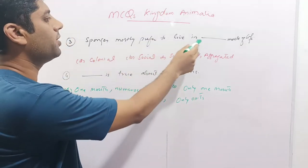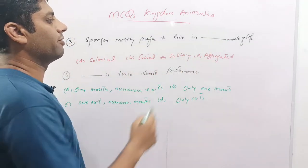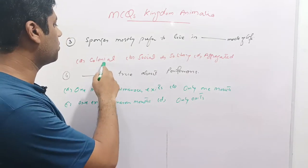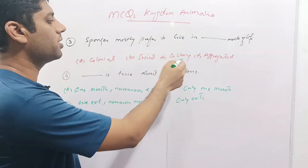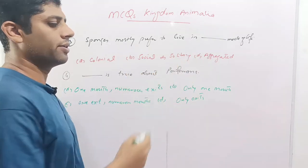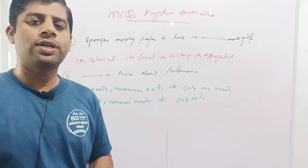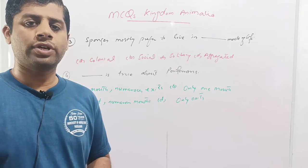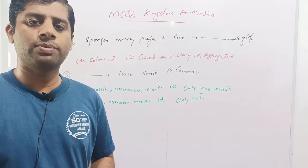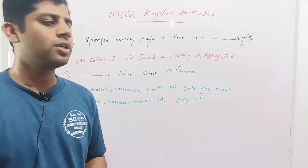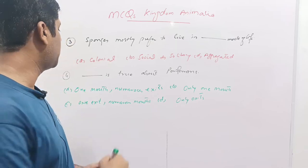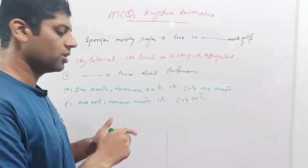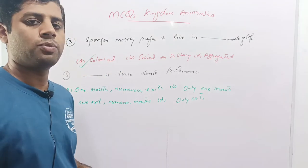Next question: sponges mostly prefer to live in which mode of life? Given options are colonial, social, solitary, or aggregated. Sponges are members of Phylum Porifera and they prefer to live in the colonial form in the aquatic environment. So option A is correct.